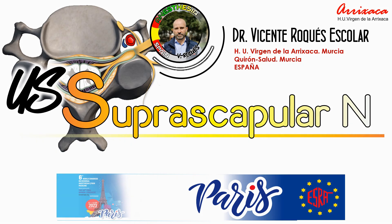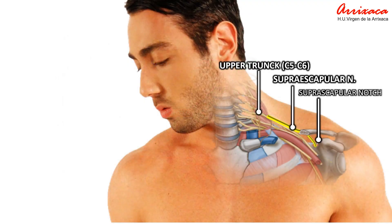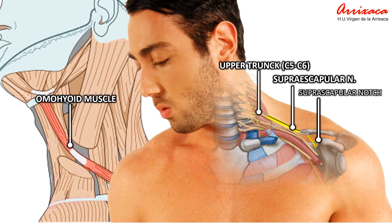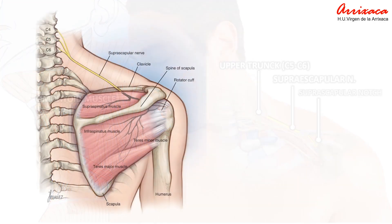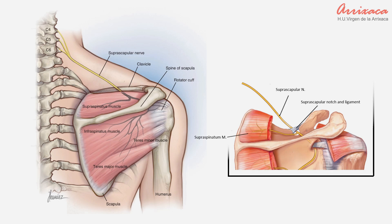The suprascapular nerve is a mixed nerve that branches from the upper trunk of the brachial plexus, and is the third and last branch arising from the upper trunk. After branching, the nerve passes across the posterior triangle of the neck, parallel to the inferior belly of the omohyoid muscle and deep to the trapezius muscle. Once the nerve emerges laterally from the superior trunk of the brachial plexus at the level of the cricoid cartilage, it enters the supraspinatus fossa posteriorly via the suprascapular notch, underneath the superior transverse scapular ligament.